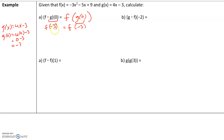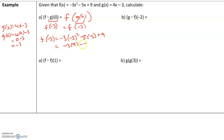We then bring down the f, so we want to find f of negative 3. To find f of negative 3, we take the f function and replace each x value with negative 3. Following order of operations, negative 3 squared is positive 9, so we have negative 3 times 9 minus 5 times negative 3 plus 9, which gives negative 27 plus 15 plus 9. Negative 27 plus 15 is negative 12, and negative 12 plus 9 is negative 3. So f of g of 0 equals negative 3.